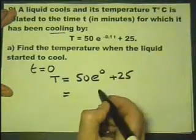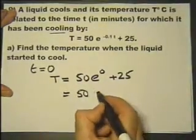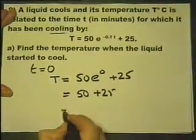E to the 0 is 1, even without the calculator, so 50 times 1 is 50. So there's the answer.